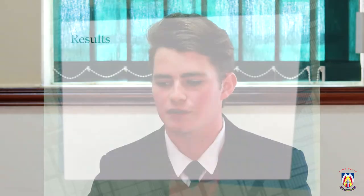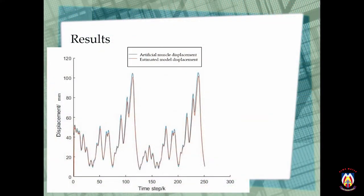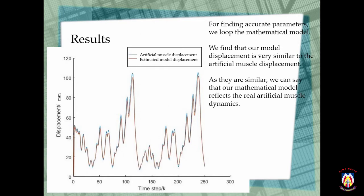So the results we obtained: as the graph shows, the artificial muscle model and the estimated muscle displacement are extremely similar. And then for finding our accurate parameters, we can loop the mathematical model. We find that our model displacement is similar to the artificial muscle model displacement. So then as they are similar, we can say that our mathematical model represents the artificial muscle dynamics.